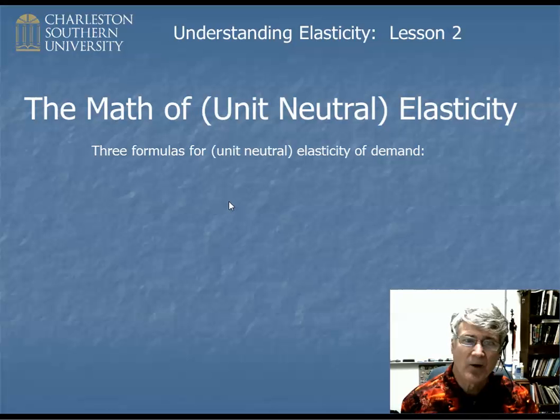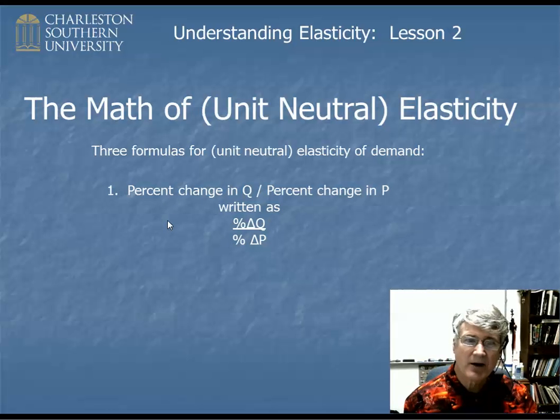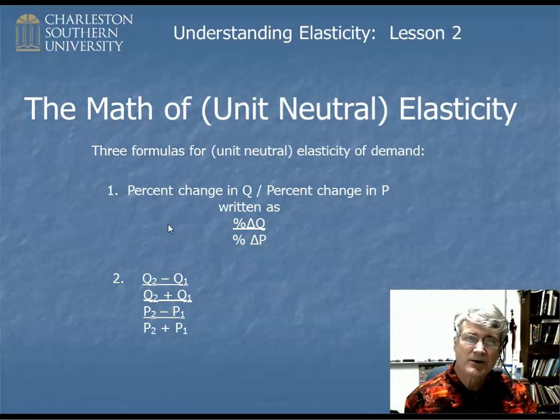All right, so there are three formulas and you're probably going to have to memorize them. The first is what I call the definition, that is unit neutral elasticity is simply the percentage change in Q divided by the percentage change in P. And then there are two, in the old days we called them working formulas. That monster that you see there is called the arc form, and it's the formula that you would use for actually calculating elasticity if you were given two points on a demand curve.